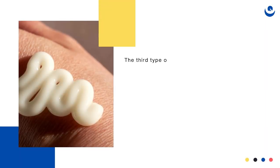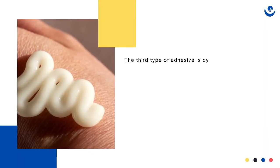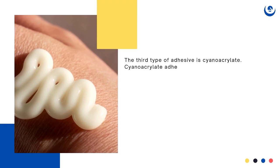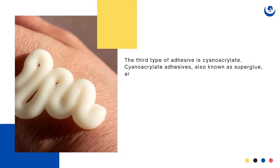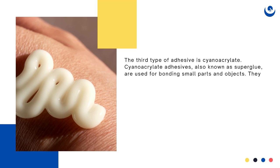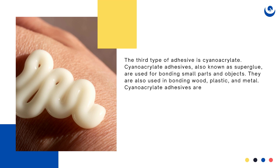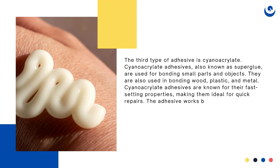The third type of adhesive is cyanoacrylate. Cyanoacrylate adhesives, also known as superglue, are used for bonding small parts and objects. They are also used in bonding wood, plastic, and metal. Cyanoacrylate adhesives are known for their fast-setting properties, making them ideal for quick repairs. The adhesive works by reacting with moisture in the air to form a strong bond.